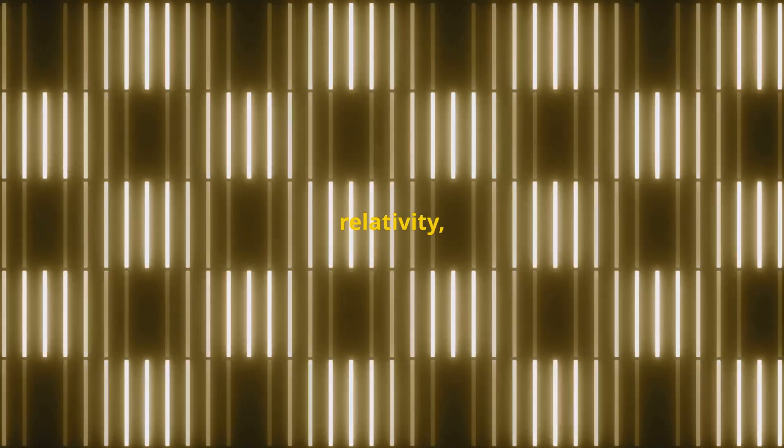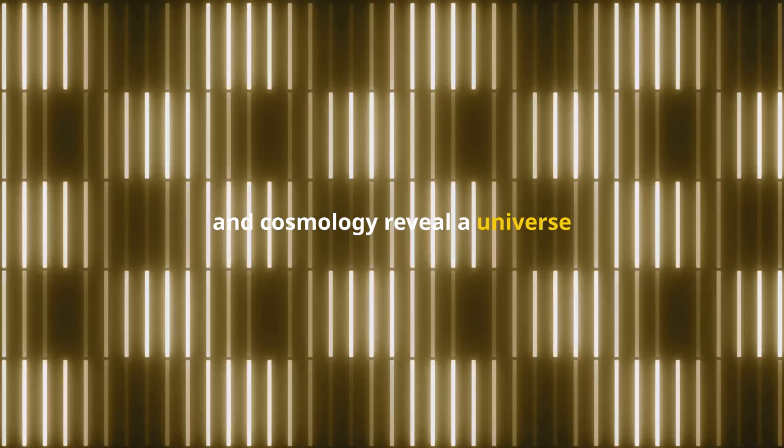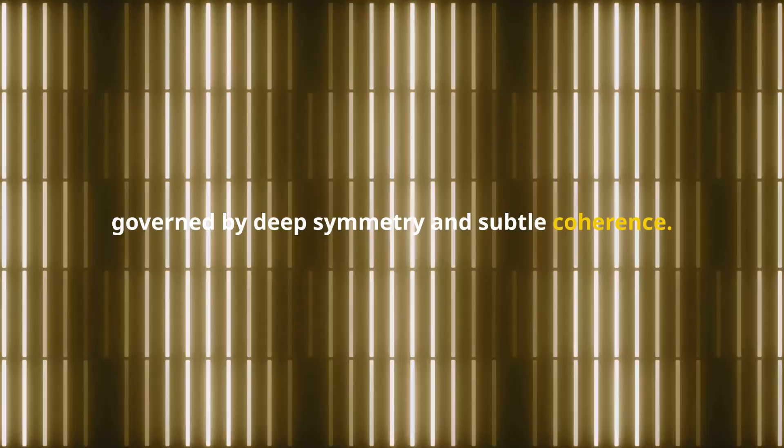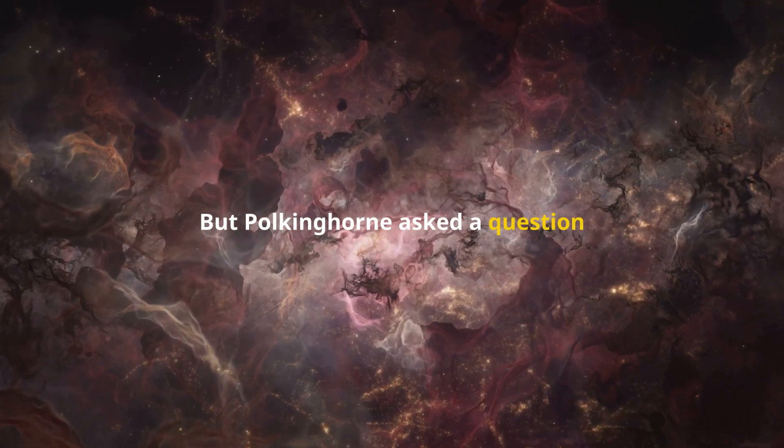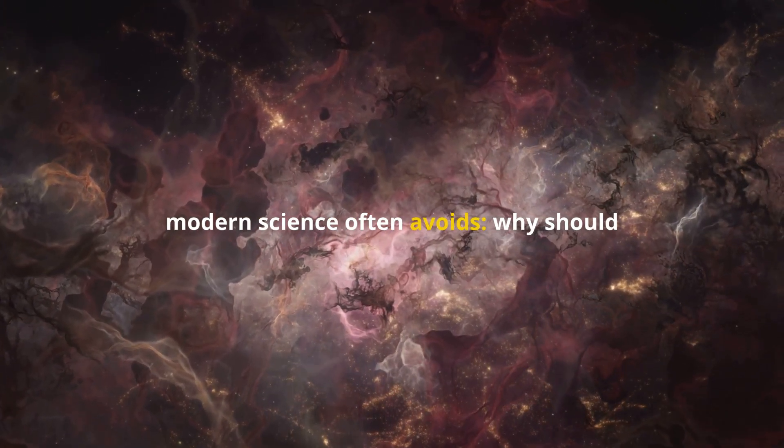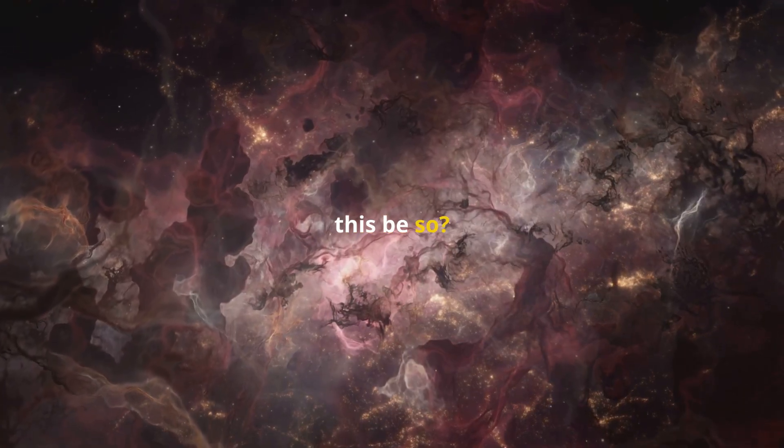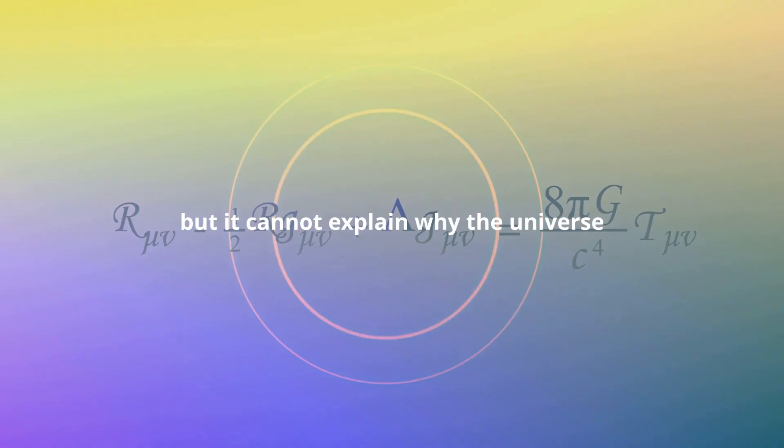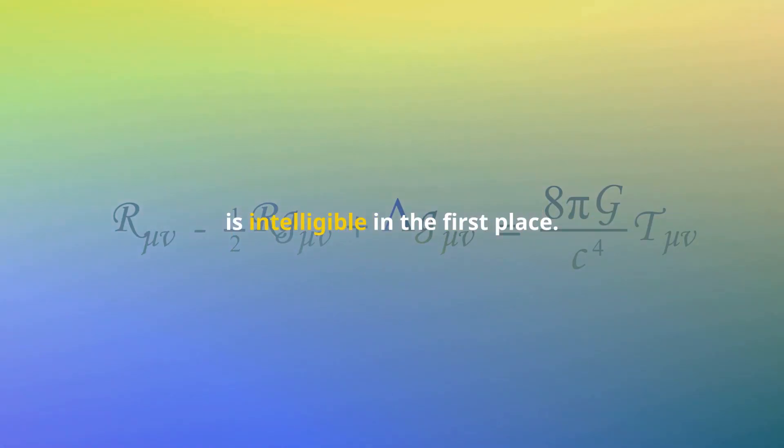Quantum theory, relativity, and cosmology reveal a universe governed by deep symmetry and subtle coherence. But Polkinghorne asked a question modern science often avoids: Why should this be so? Physics describes how the universe behaves, but it cannot explain why the universe is intelligible in the first place.